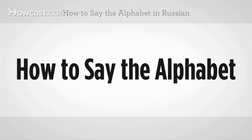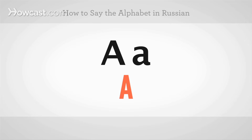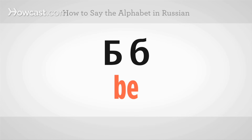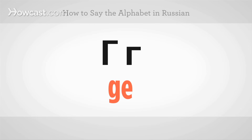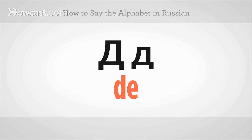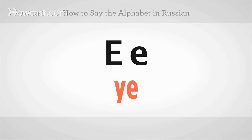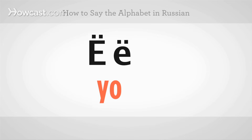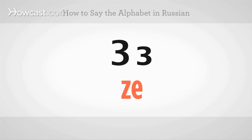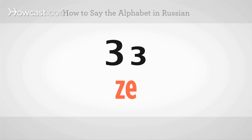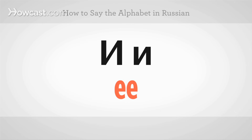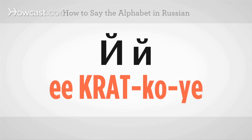How to say the alphabet in Russian. This particular letter is called И краткая. Краткая is the second word of that name, and the accent falls on the first syllable. И краткая.